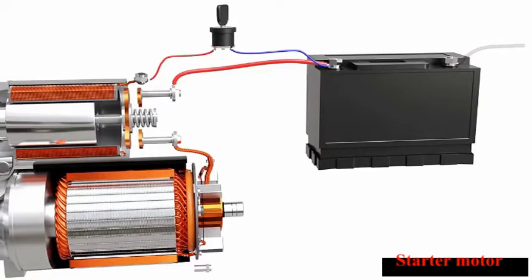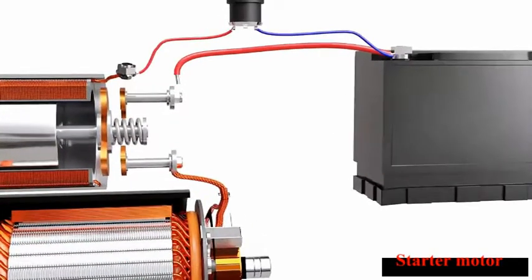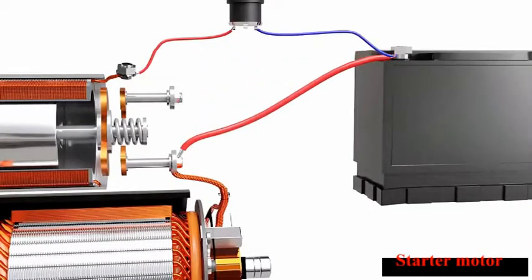We may wonder why the solenoid and the contactor are used instead of directly connecting the battery to the motor and reducing the complexity. The reason behind not using the direct circuit is the high current demand of the motor.